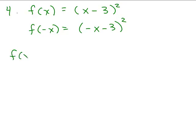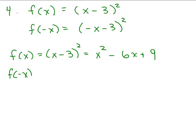So if I take my original function and square it, I get x squared minus 6x plus 9. If you take negative x minus 3 and square it — this is tricky — you get x squared, but then it ends up being plus 6x plus 9.